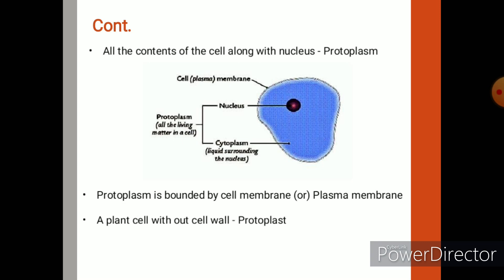If we observe the picture clearly, in a plant cell, nucleus is present. The nucleus is surrounded by the jelly-like substance called cytoplasm. Both nucleus and cytoplasm are combinedly called as protoplasm. This protoplasm is bounded by cell membrane or plasma membrane. This protoplasm and cell membrane are combinedly called as protoplast, which is protected by cell wall.